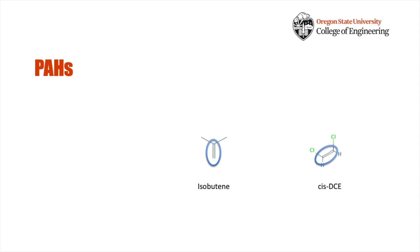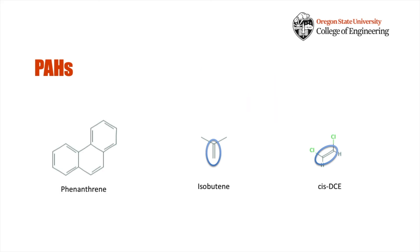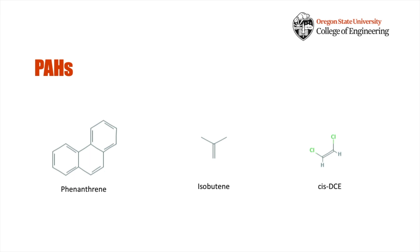What do isobutene and CIS-DCE have in common? A double bond. And if we look at the metabolites of these two compounds, an epoxide is formed at the location of the double bond. Now here's phenanthrene — and look, a double bond. Actually, there are a lot of them. So even though the compounds look very different structurally, the presence of double bonds in all of them is a hint that the monooxygenase may transform PAHs as well.